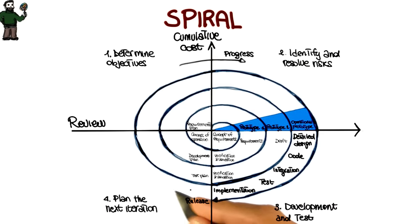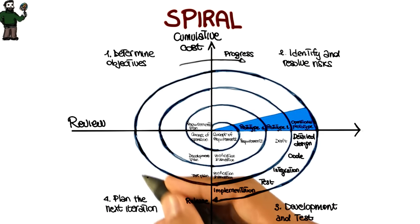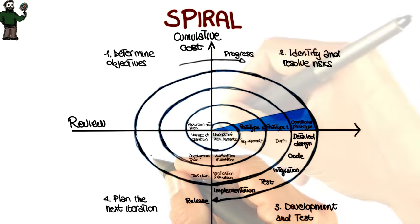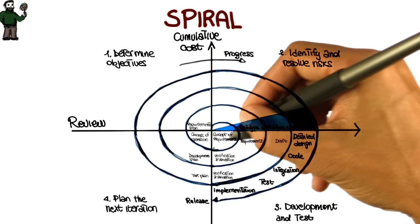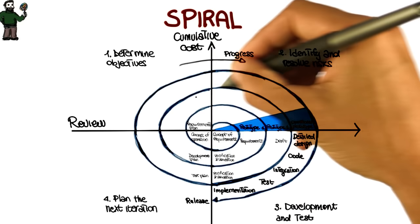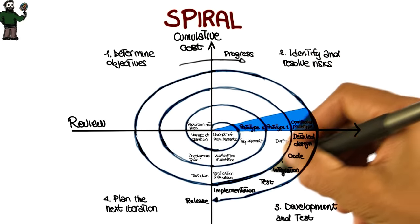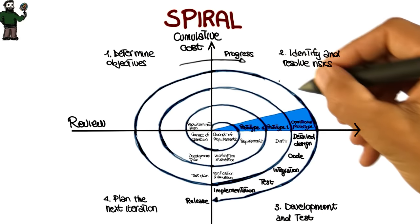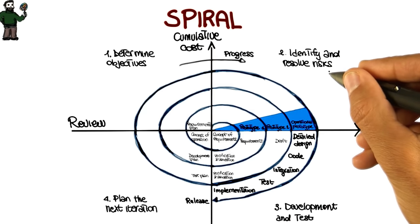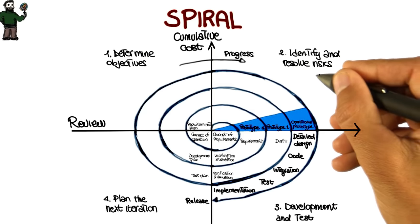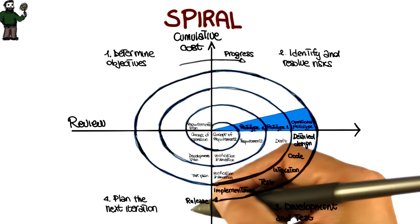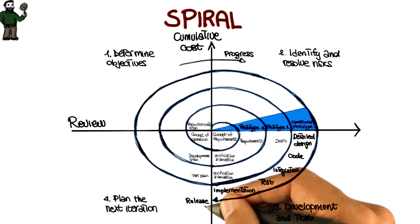Finally, in the fourth phase, the output of the project so far is evaluated and the next iteration is planned. Basically, what the spiral process prescribes is a way of developing software by going through these phases in an iterative way, in which we learn more and more about the software, identify and account for more and more risks, and move more and more towards our final solution, our final release.